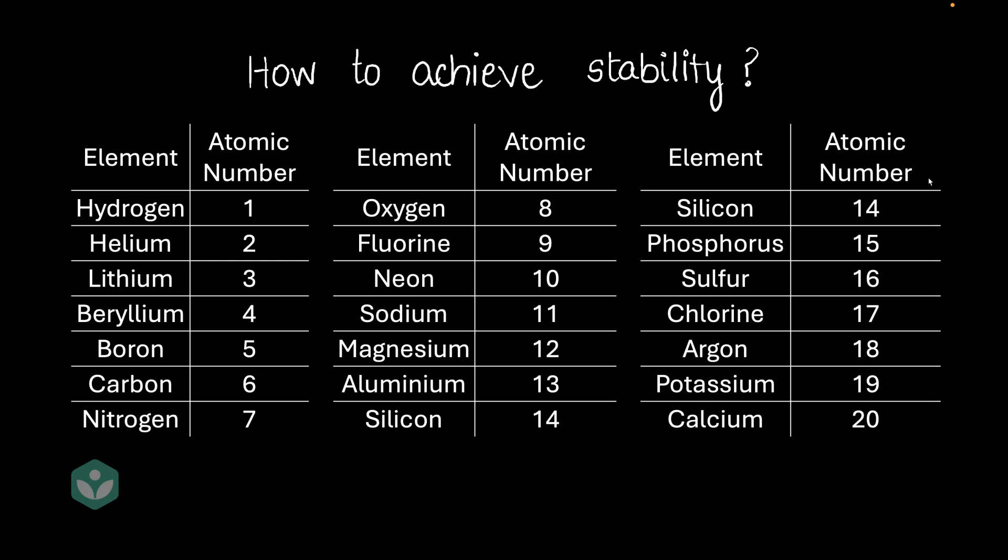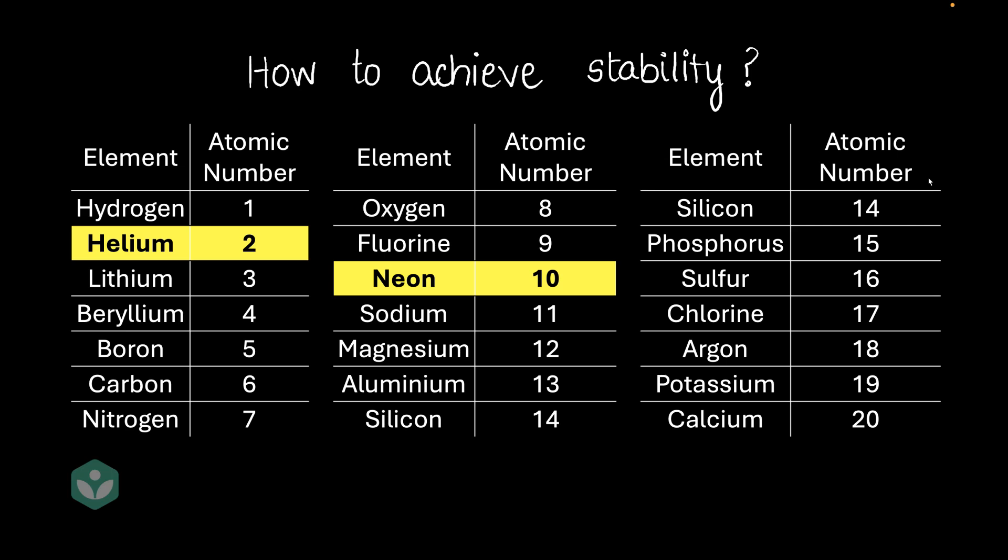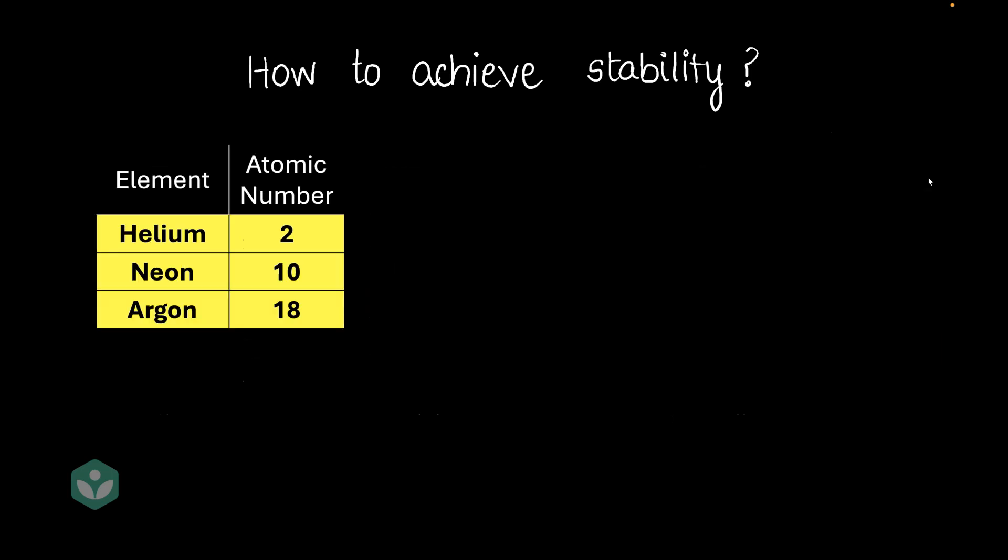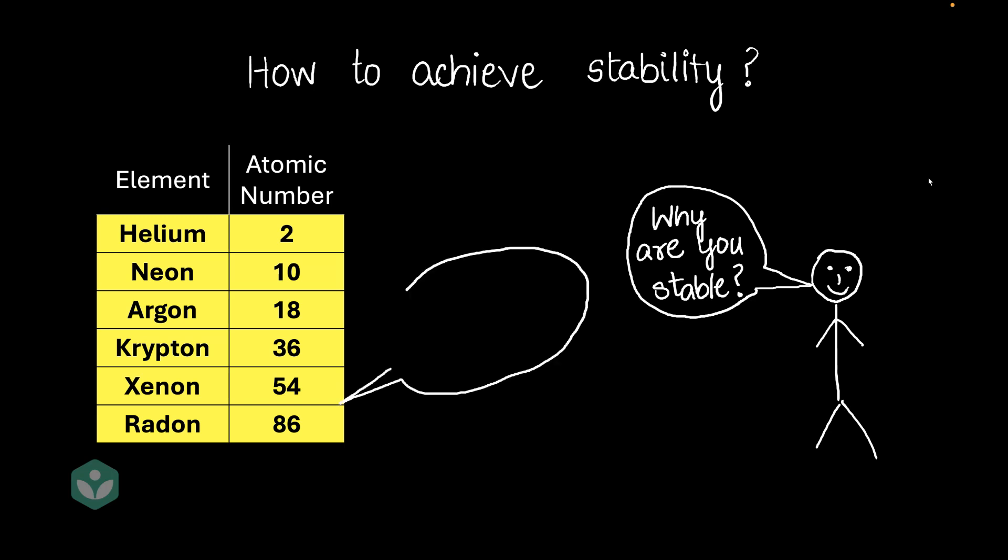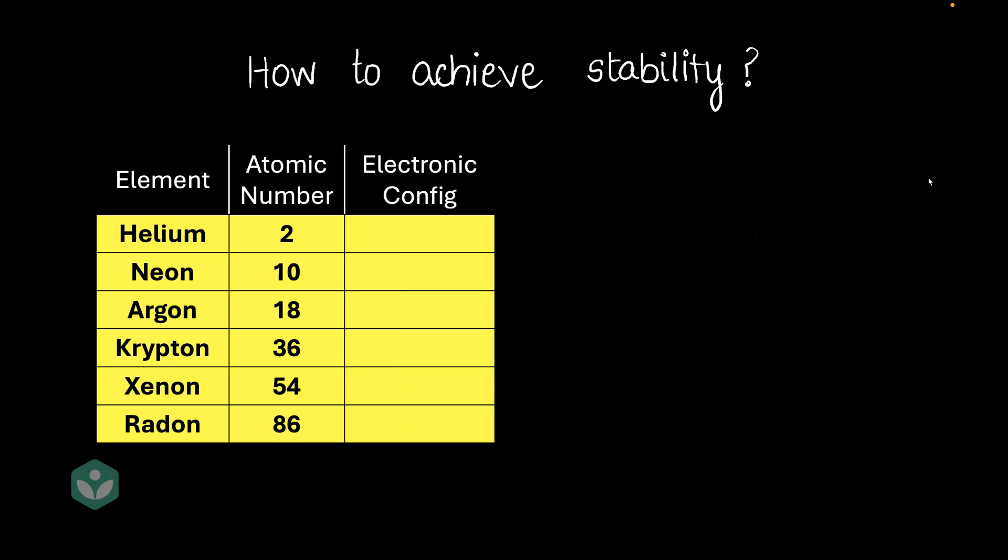So here is the list of maybe the first 20 elements, and I pick out the noble gases. Okay, so that's helium, neon and argon. And I also take some more noble gases: krypton, xenon, radon. This is almost the entire list of noble gases. And I ask them a question, why are you guys stable? And this is what they tell me. They tell me, hey, look at our electronic configuration and you'll get to know the secret. So I go ahead and list out their electronic configuration.